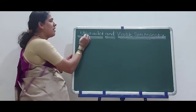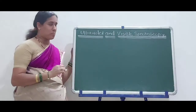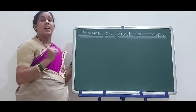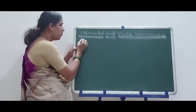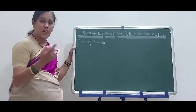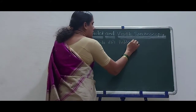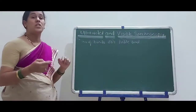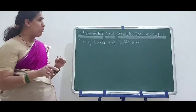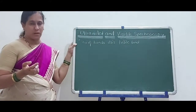We have seen the energy levels for molecules using electronic, vibrational, and rotational energy level excitations. Now we will discuss the range for ultraviolet and visible spectroscopy. First of all, why study UV-visible spectroscopy? To understand the number of bonds — double bonds and triple bonds — present in the molecule, and which type of conjugation is present.